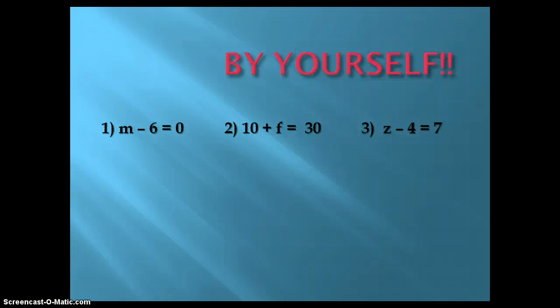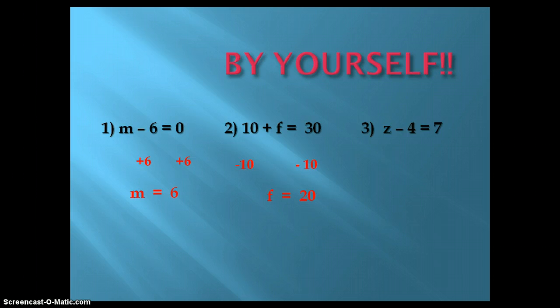Good job, everyone! You did it correctly. Finally, the first problem, M minus 6 equals 0. You add the 6 to both sides, finding M equals 6. Second problem, you subtract 10 from both sides and found that F equals 20. Last, you added 4 to both sides and found that Z equals 11. Very good!